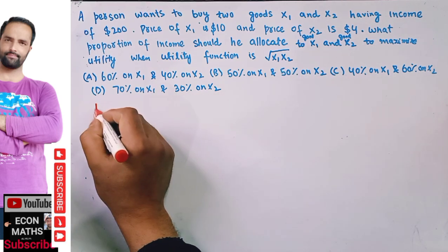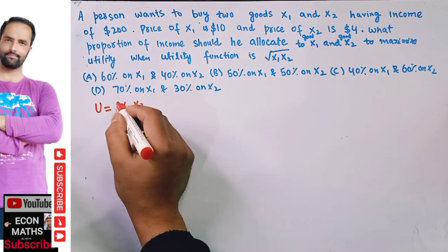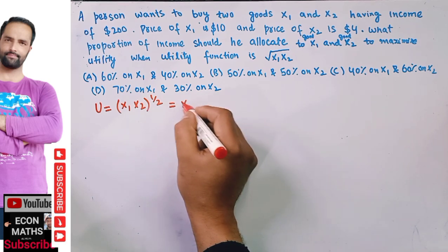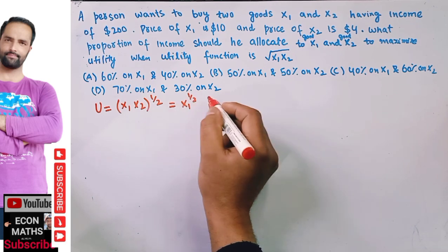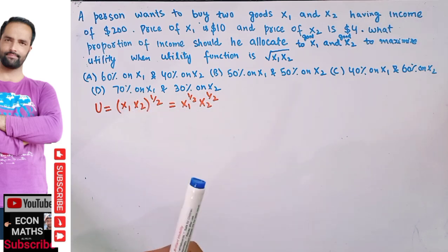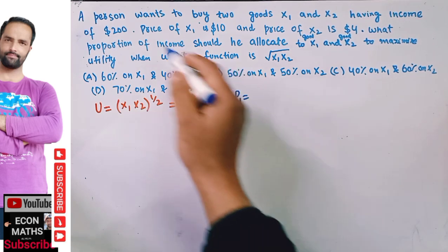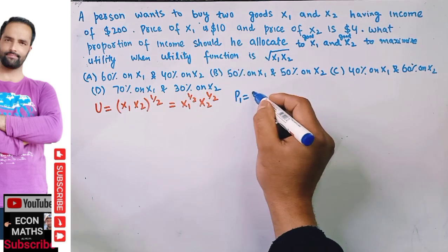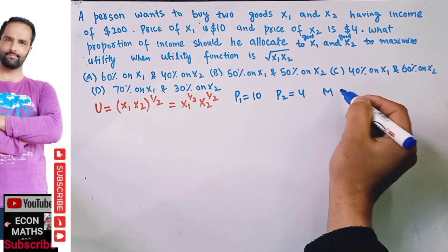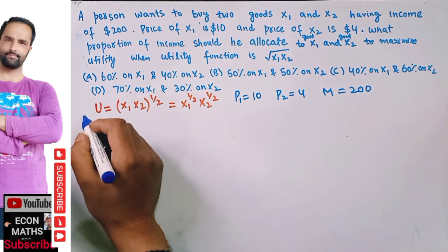We are given the utility function U = X1·X2, which we can write as X1 raised to the power 1/2 times X2 raised to the power 1/2. Also given: price of good 1 is $10, price of good 2 is $4, and total income is $200.